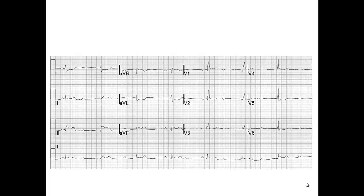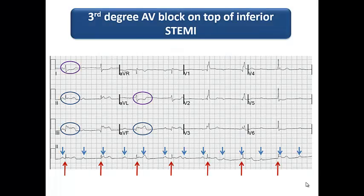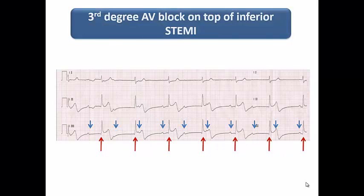Here is an ECG with P waves completely dissociated from the QRS complexes — third degree AV block. A common mistake in the ER is focusing on the striking bradycardia and scheduling a temporary pacemaker, while missing the ST elevation in inferior leads. This patient has third degree AV block on top of inferior STEMI. They do not need a permanent pacemaker; they need revascularization by opening the culprit vessel, after which the complete heart block will resolve. Another ECG also shows complete AV dissociation on top of inferior STEMI.